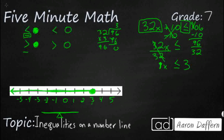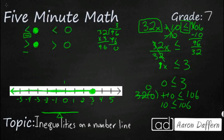Let's just take 0 and see if that works. We can see that 0 is obviously less than or equal to 3. Let's plug it back into the original inequality: 32 times 0 plus 10 less than or equal to 106. Anything times 0 is 0, so that's just 10 is less than or equal to 106 — and that works out perfectly. So here is our answer.